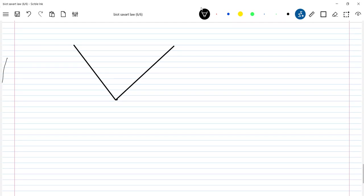A long current-carrying wire with current I has been bent at a distance. There's a point P, let this angle be 45 degrees and this be 45 degrees.